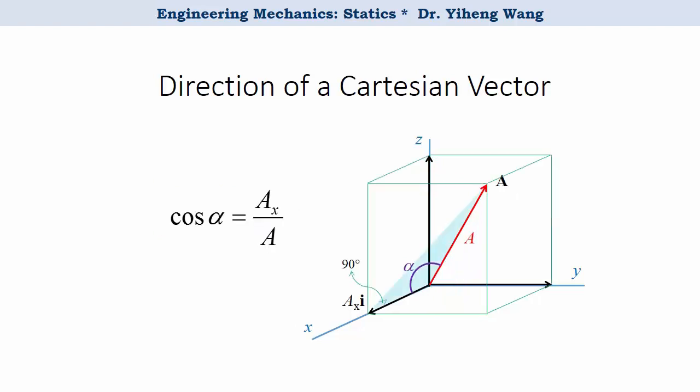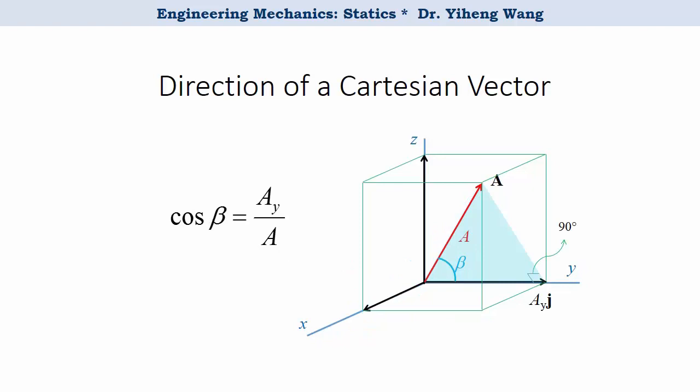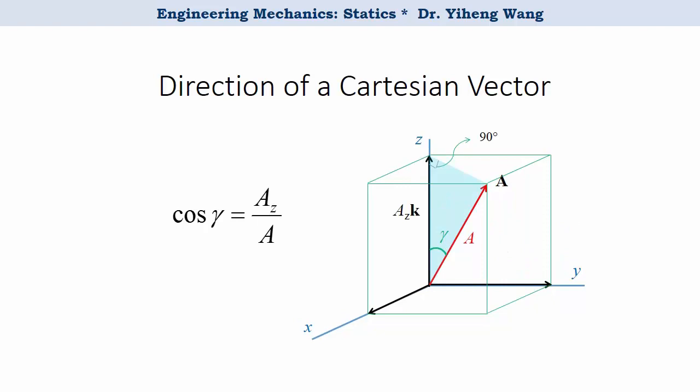If we highlight the plane made by the vector a and x axis, shown as the blue shaded area, then according to trigonometry we know that cosine alpha equals a_x divided by a. Similarly, as shown in the right triangle made by the vector and y axis, cosine beta also equals a_y divided by a. And again, cosine gamma also equals a_z divided by a.